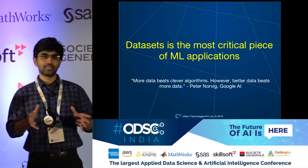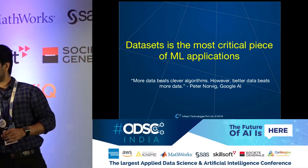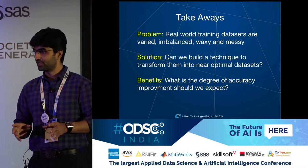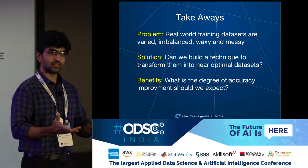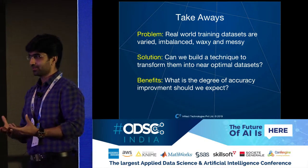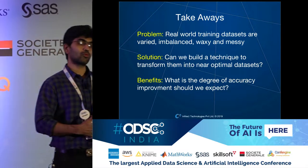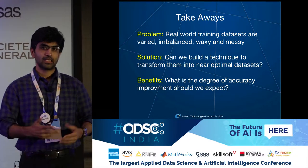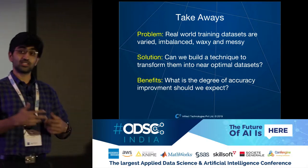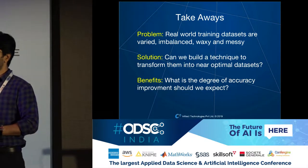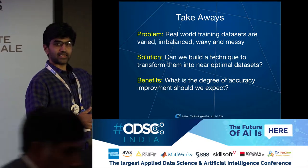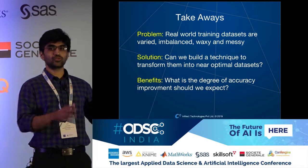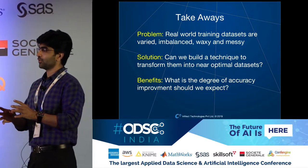I'm going to talk to you about a technique which can get you better datasets. At the end of my talk, I want you to have three takeaways. First, real-world problems are messy and chaotic. If you have worked on more than one computer vision problem, you'd know that one problem differs from another in terms of schema, number of classes, or number of instances per class. I'm going to talk about a technique which, given any kind of dataset, will help you transform it into a near-optimal dataset.